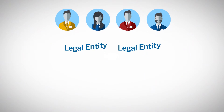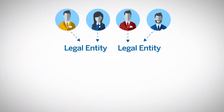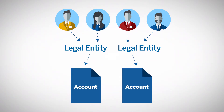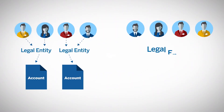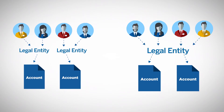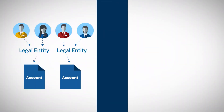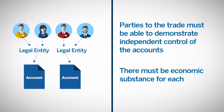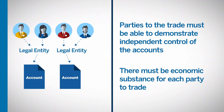In certain circumstances, EFRPs may be executed between affiliated accounts. However, the rule requires that such affiliated accounts be independently controlled accounts of separate legal entities with common beneficial ownership, or independently controlled accounts of the same legal entity if the account controllers operate in separate business units. For EFRP transactions between accounts with common beneficial ownership, the parties to the trade must be able to demonstrate the independent control of the accounts and that the transaction had economic substance for each party to the trade.